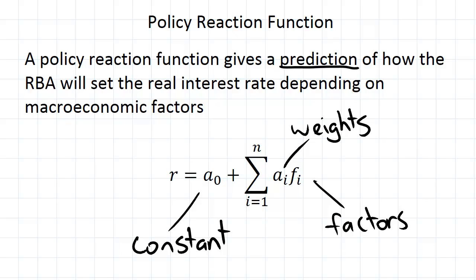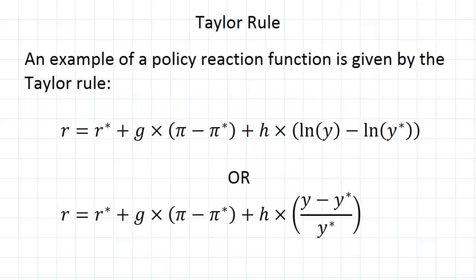So we'll look at an example of a policy reaction function. We've seen in our previous videos that the RBA will use the real interest rate to combat inflation and also to combat output gaps. So it should be unsurprising then the form of the Taylor rule. The Taylor rule uses two factors.